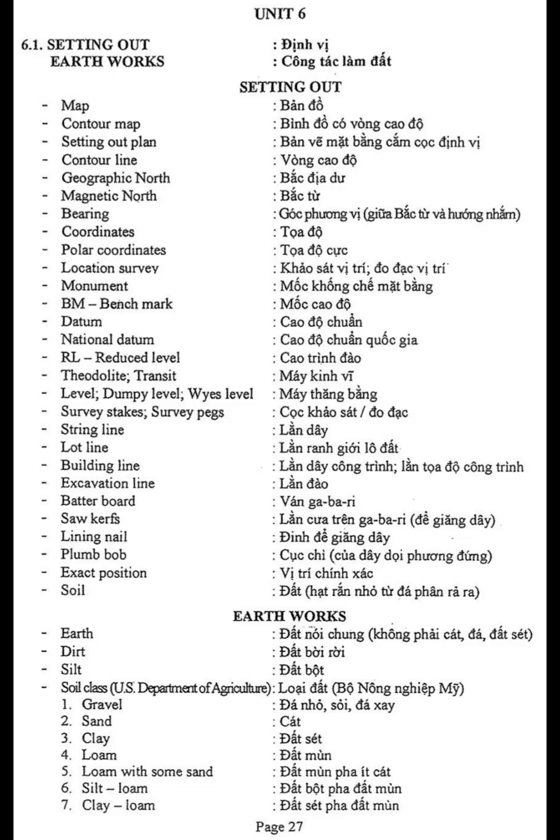Unit 6. 6.1 Setting Out Earthworks. Vocabulary: Setting Out Map, Contour Map, Setting Out Plan, Contour Line, Geographic North, Magnetic North, Bearing, Coordinates, Polar Coordinates, Location, Survey Monument, BM Benchmark, Datum, National Datum, RL Reduced Level, Theodolite, Transit Level, Dumpy Level.